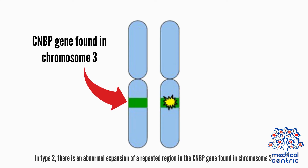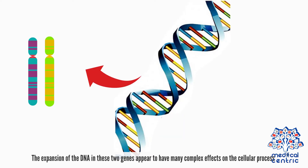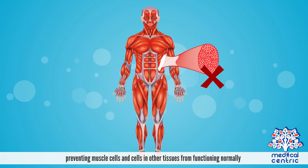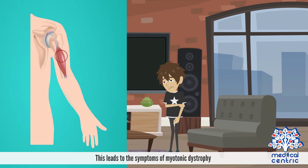In type 2, there is an abnormal expansion of a repeated region in the CNBP gene found on chromosome 3. The expansion of the DNA in these two genes appears to have many complex effects on cellular processes, preventing muscle cells and cells in other tissues from functioning normally. This leads to the symptoms of myotonic dystrophy.